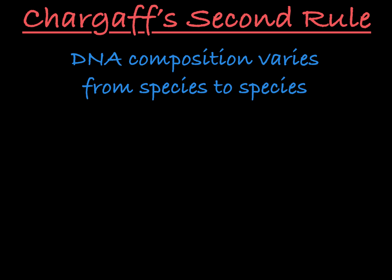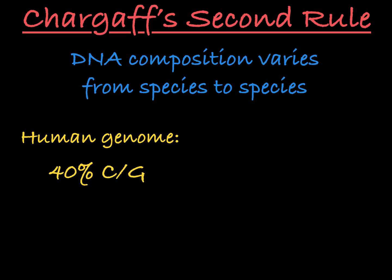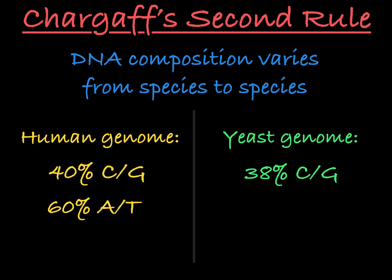For example, the human genome is about 40% guanine and cytosine and about 60% adenine and thymine, while the yeast genome is about 38% guanine and cytosine and about 62% adenine and thymine. So you can see that the amounts of each base vary from species to species.